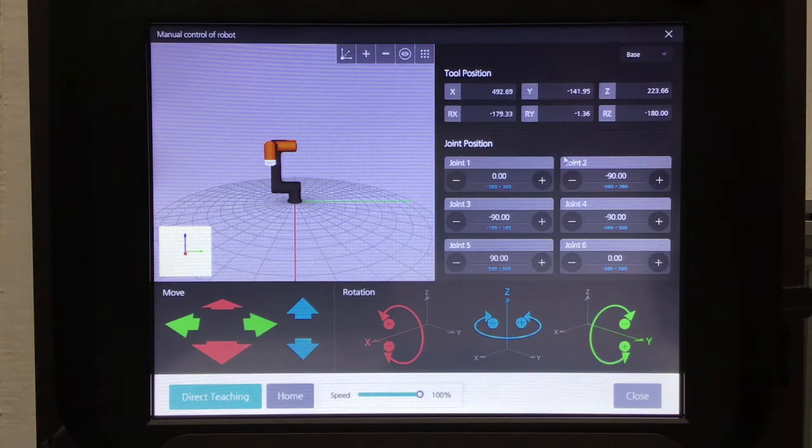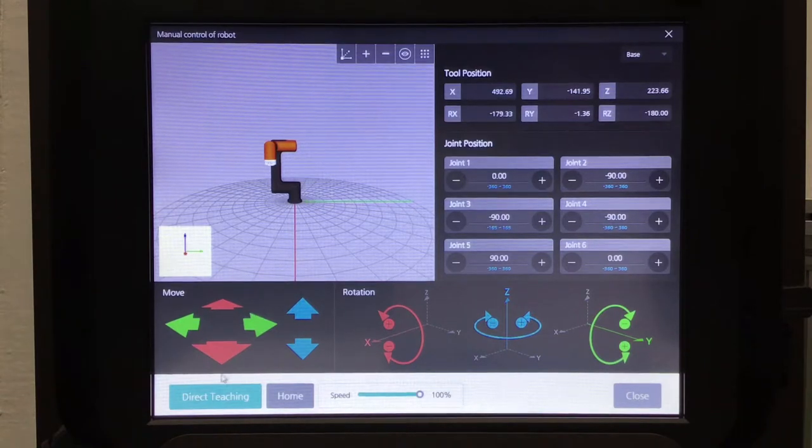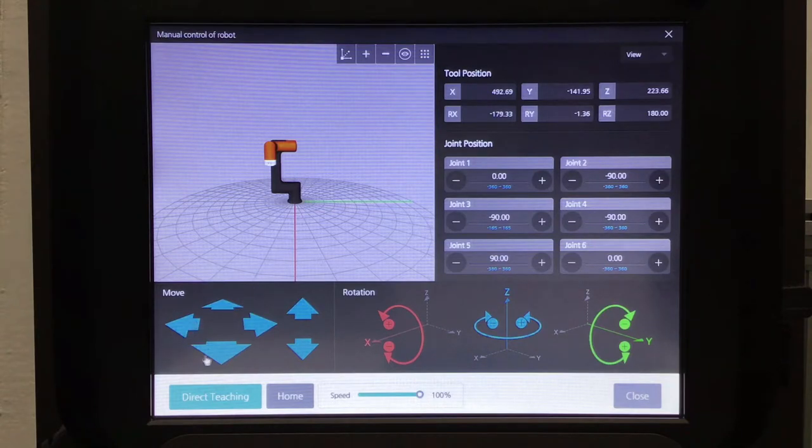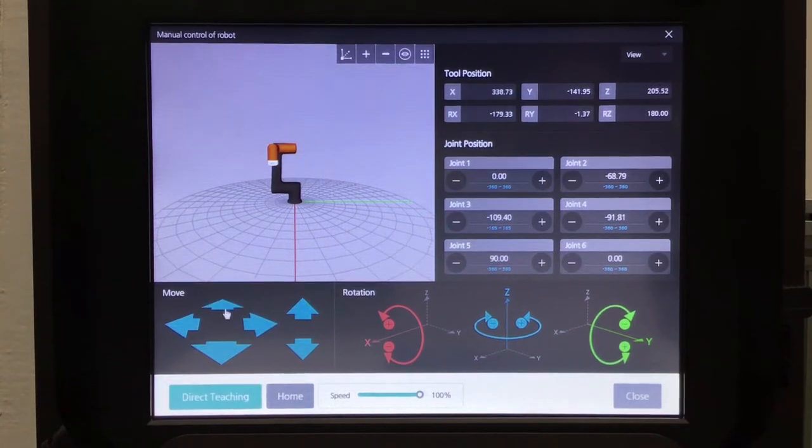The only other thing on this page that I want to show you is this base and tool center point and view option. So we were working with the base. All of these moves have been relative to the base plane, the base XYZ axis. Now, if you change that to view, all of these arrows turn blue. Now what that means is that on this preview screen you see right here on the controller, wherever you move these arrows is how the robot is going to react. Since we haven't adjusted the preview screen, it's going to act in the exact same way as base.